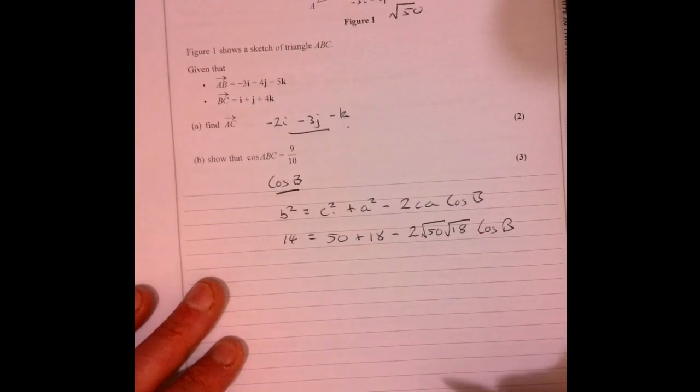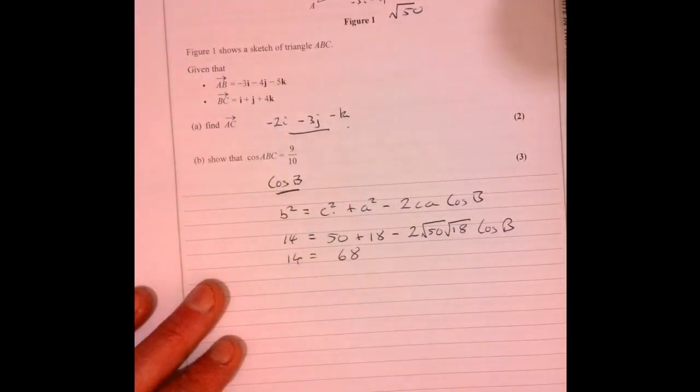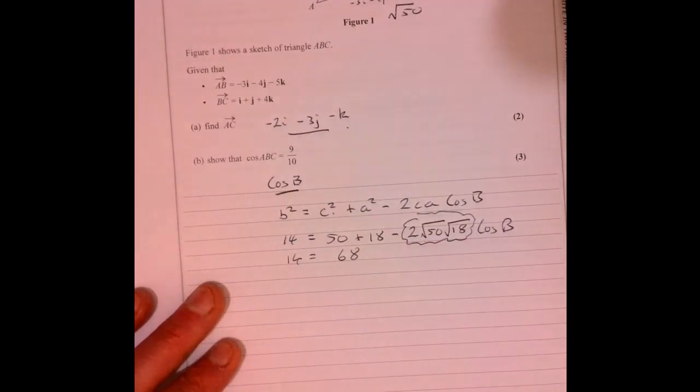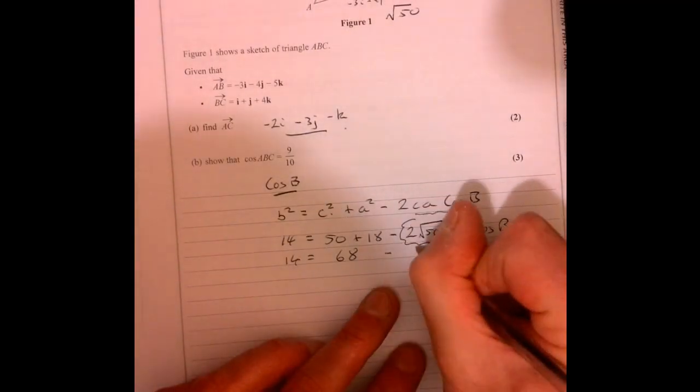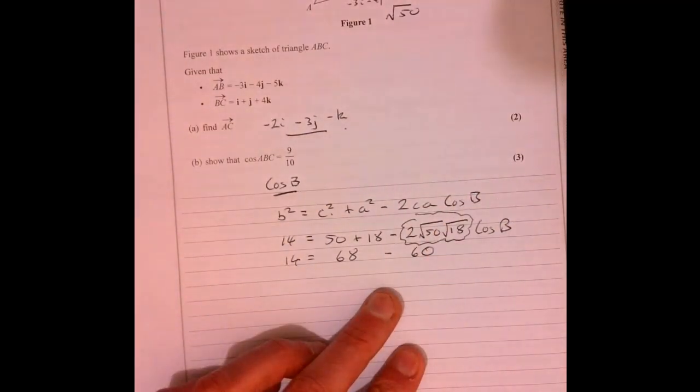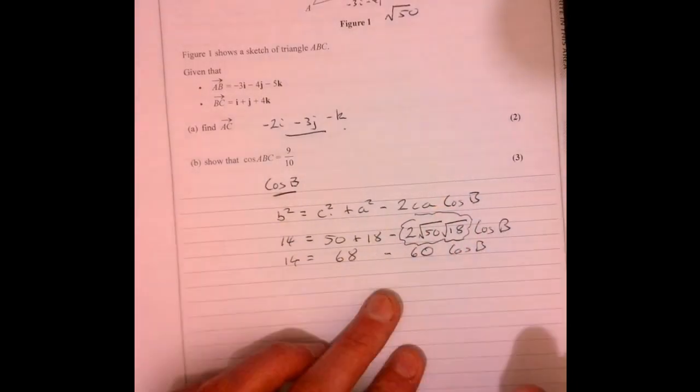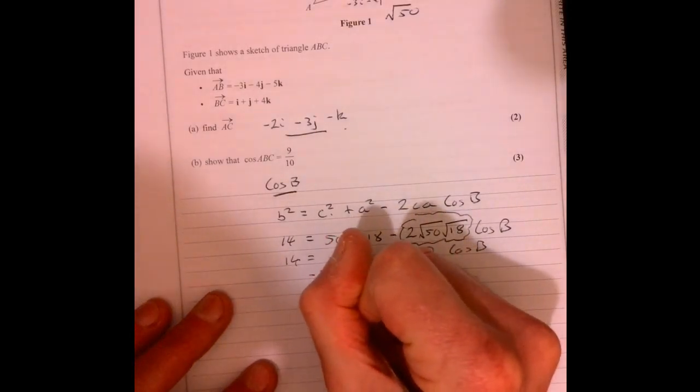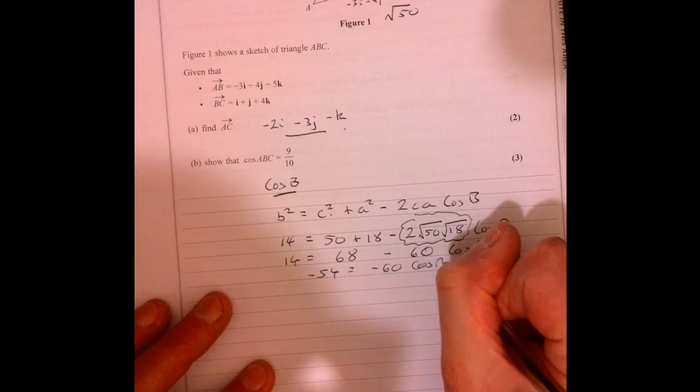Just tidy the thing up a little bit. So what have we got, 14 equals, so we've got 68. This bit, just there, you can, if you want to, you can just pop that into your calculator and that will give you 60. That's equal to 60 cos B. Just a little bit of rearranging. Take away 68 from both sides. That gives me minus 54 equals minus 60 cos B.